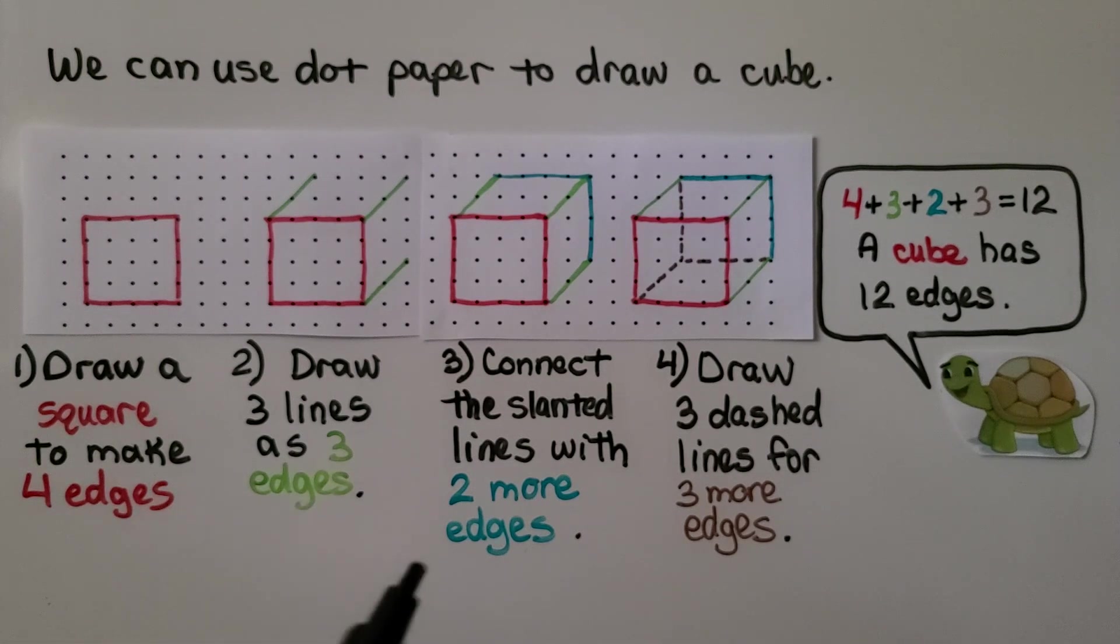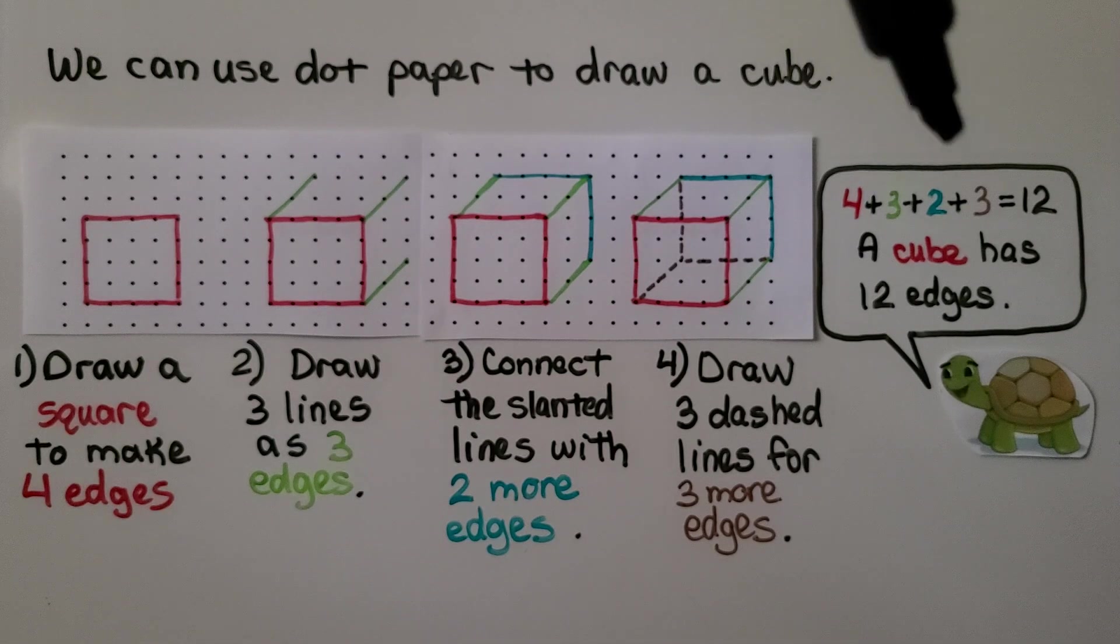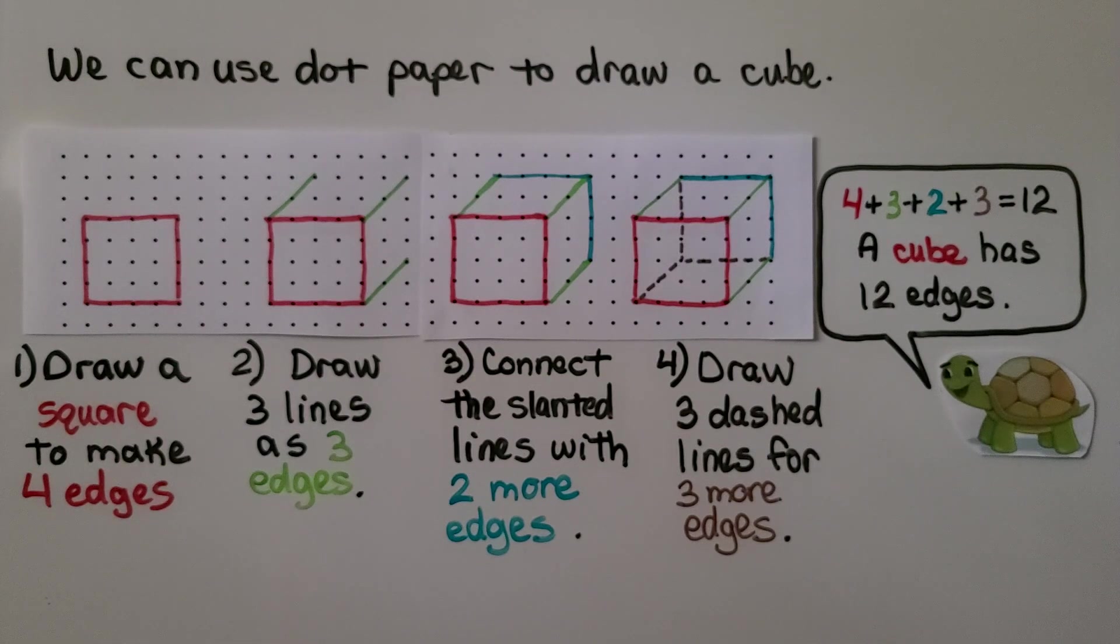Now if you look, we have four edges, three edges, two edges, three edges. And if we add four plus three plus two plus three, that's equal to twelve. A cube has twelve edges.